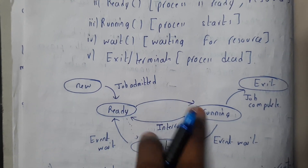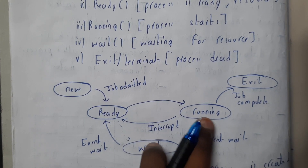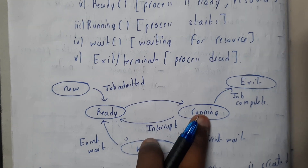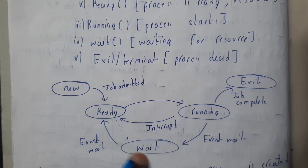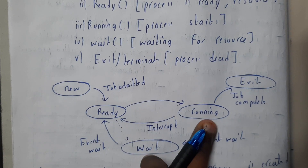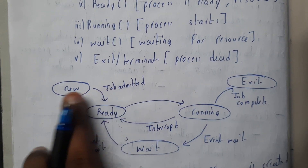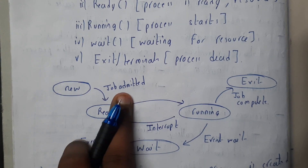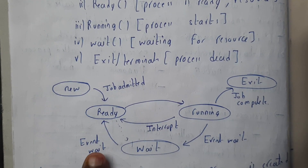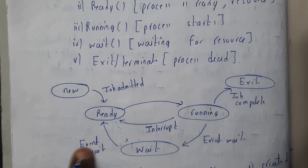After some running it will identify that resources are missing and then it will go to waiting state. Once it is ready it goes to running state, and if it notices that it needs a hardware device it comes to waiting state, and once it is ready with the particular device it comes again to ready state and runs. At the end, once the job is done it goes to exit. New means job admitted, exit means job completed.